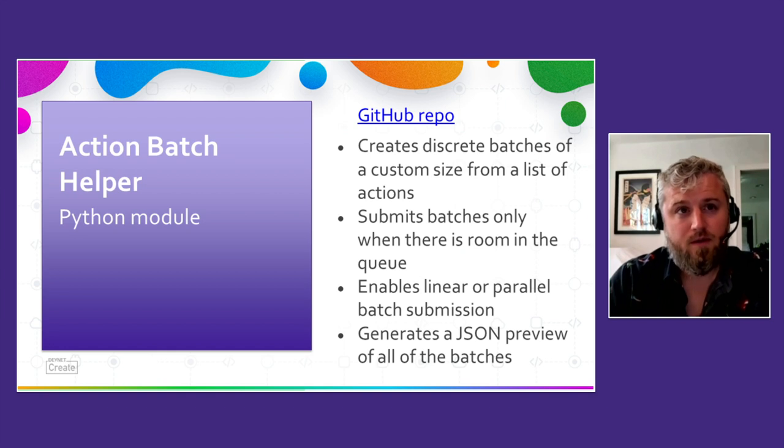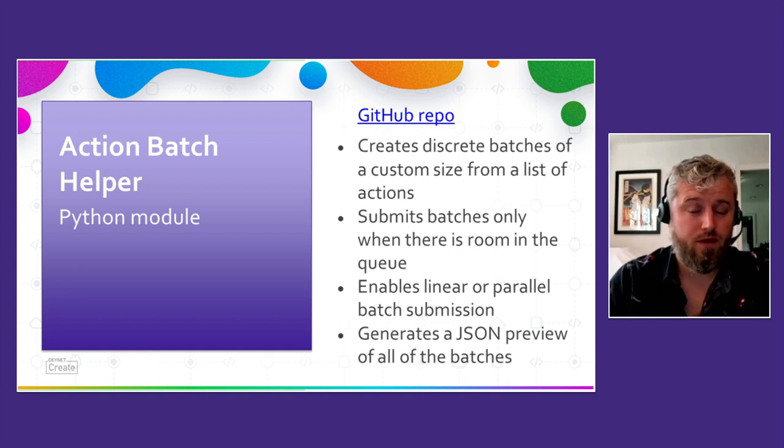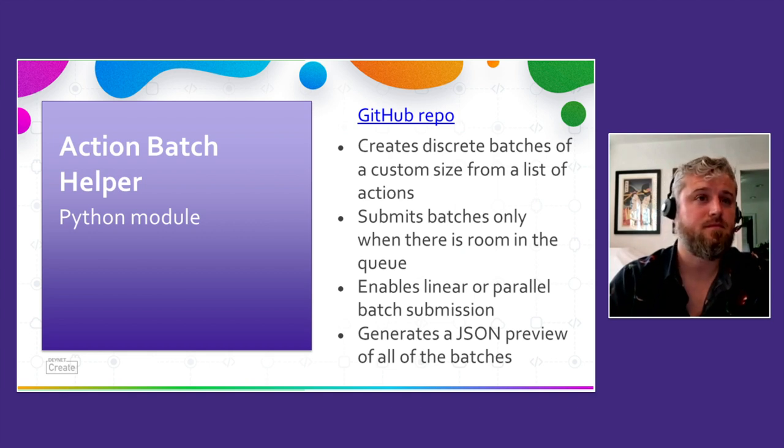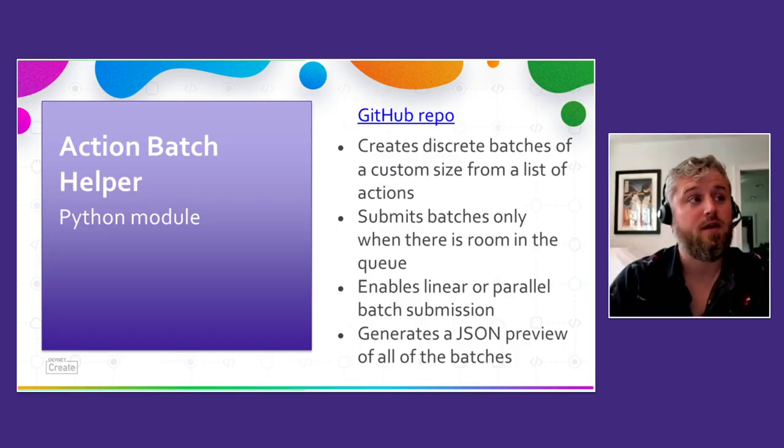The next item is a new module called the action batch helper. We already know that action batches are a powerful tool for streamlining bulk configurations, but in our scenario we need to submit 30,000 action batches. What if one of the batches in that huge list requires one of the earlier batches to succeed? You probably wouldn't want to submit the second one before the first completed. If you need to submit them in a linear fashion, that necessitates additional client-side logic. The action batch helper makes it easier to work with action batches at massive scale, handling these concerns for you when you have tens or hundreds of thousands of configuration changes to make. Key features: it creates discrete action batches of a custom size from an arbitrary list of actions, submits batches only when there's room on the organization's action batch queue, allows for simultaneous or linear batch submissions, and optionally generates a JSON preview of the entire list of batches.